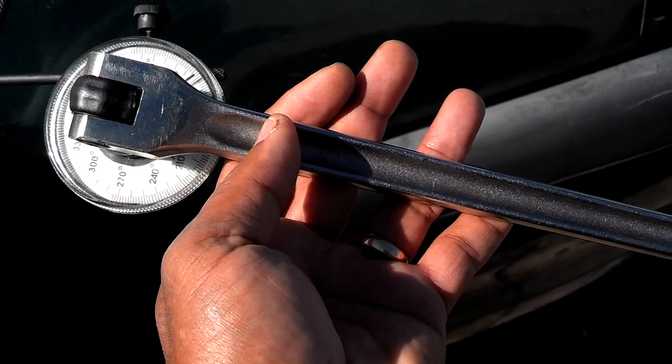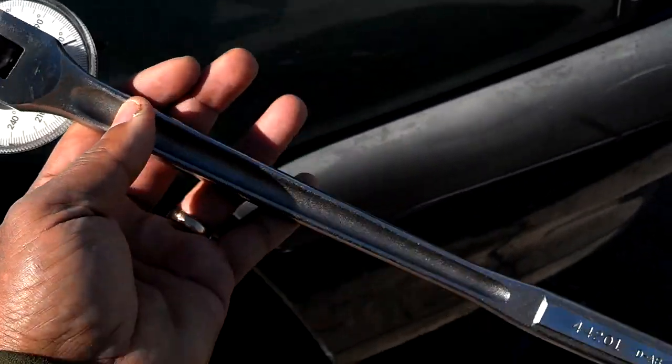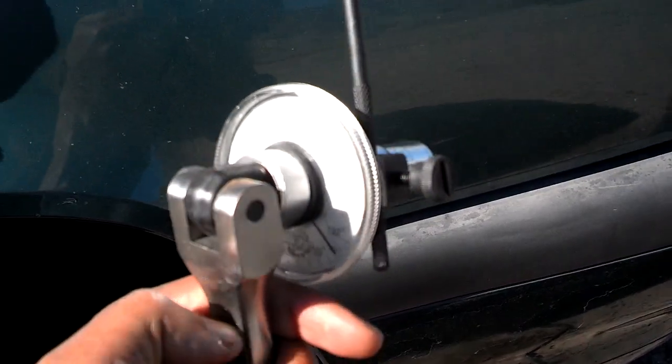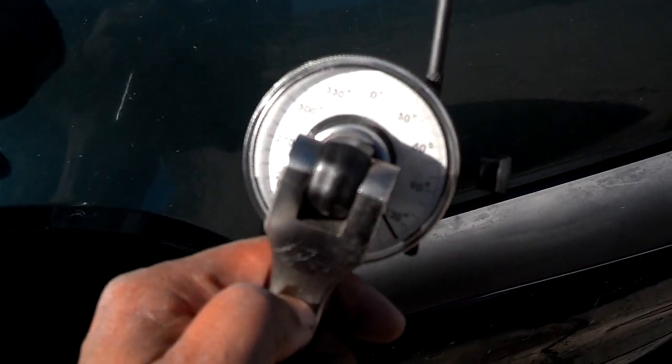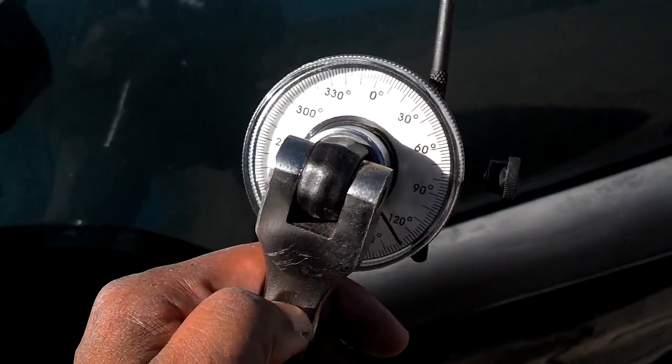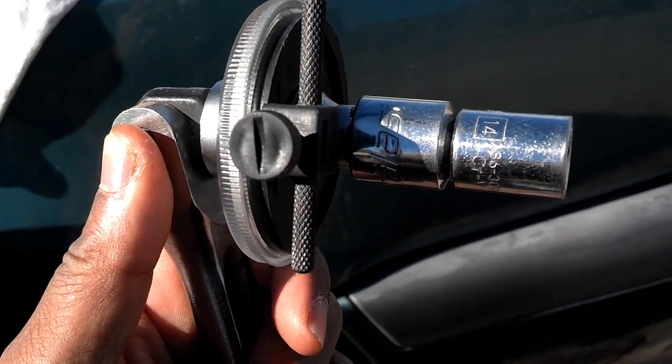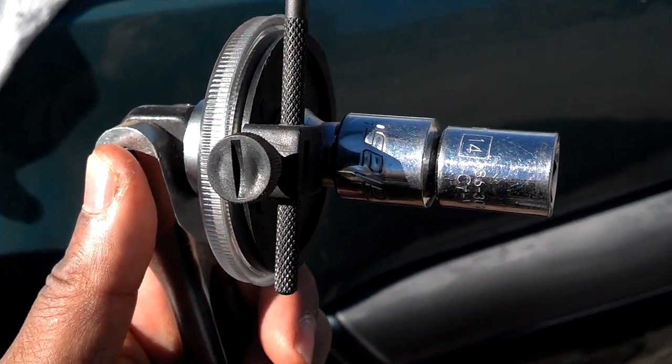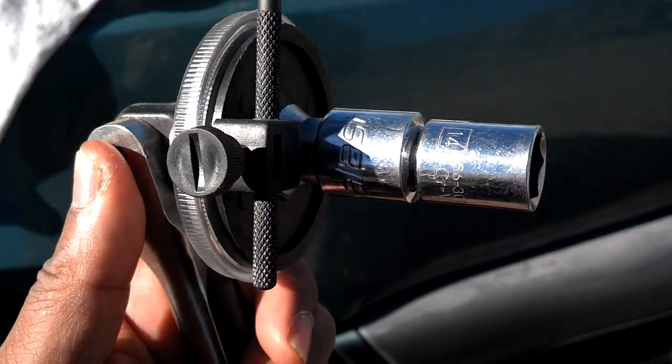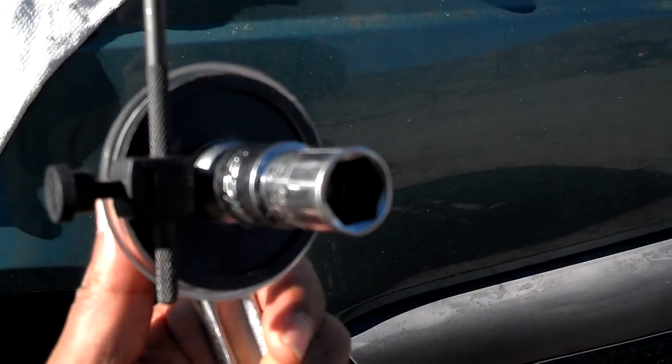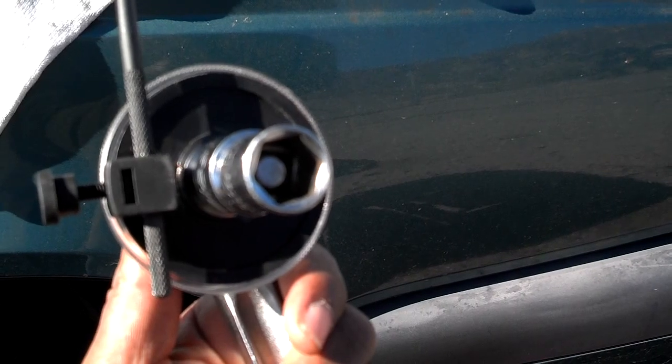Of course on your angle torque you don't need a torque wrench, a nice breaker bar is better. So I got my breaker bar here. I got my degree angle torque gauge. I got my half inch to 3/8" adapter and then I have my 3/8" 14mm socket that is a 6 point.